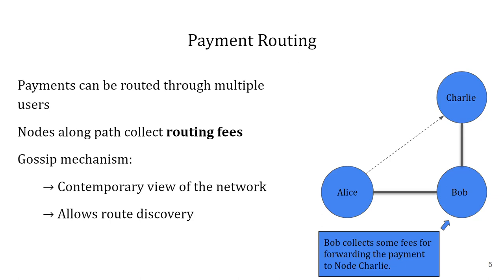These fees can vary in size and therefore a gossip mechanism is used to allow nodes to discover the cheapest routes to send their payments through. As the name may imply, gossip messages are propagated through the network to announce specific events. Therefore, all nodes have a contemporary view of the network.